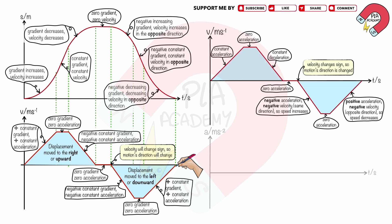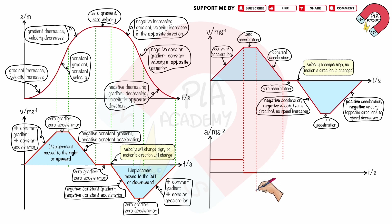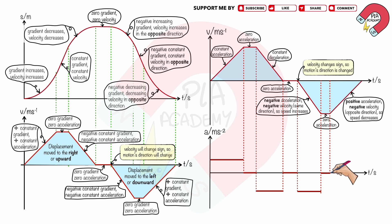Sketch the acceleration-time graph over the same time interval as the previous velocity-time graph. At the first section, draw the graph to represent constant positive acceleration. At the next section, draw the graph to represent zero acceleration. At the following section, draw the graph to represent constant negative acceleration. At the next section, draw the graph to represent zero acceleration again. At the following section, draw the graph to represent constant negative acceleration. At the next section, draw zero acceleration. At the final section, draw the graph to represent constant positive acceleration.